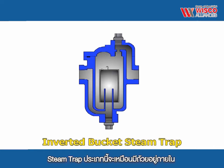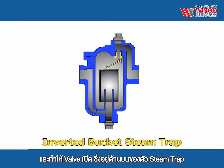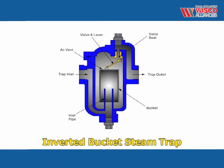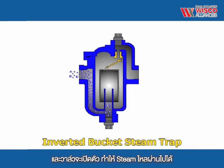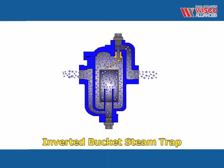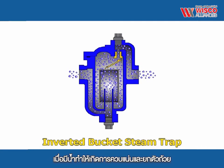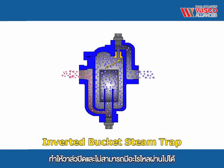This trap uses a bucket, open on the bottom, to operate a lever valve and orifice located in the top of the trap. In the absence of steam, the bucket sinks to the bottom, keeping the valve in the open position and allowing for free discharge of condensate. When steam or air enters the trap, the bucket becomes buoyant and floats to the top, closing the valve.